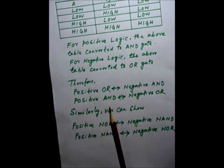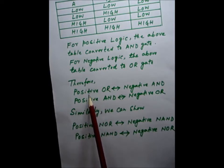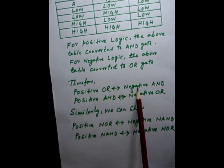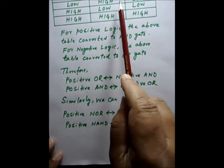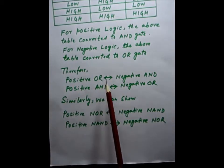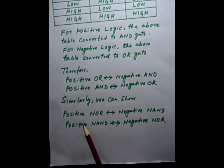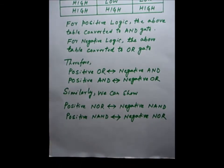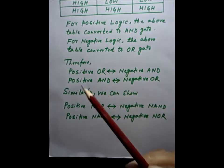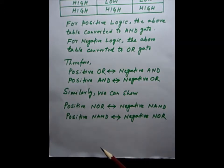From these two cases we can draw the conclusion that positive OR is equivalent to negative AND, and positive AND is equivalent to negative OR. Similarly, we can show that positive NOR is equivalent to negative NAND, and positive NAND is equivalent to negative NOR. We need to choose the table properly, substitute for positive logic and for negative logic, to prove these equivalences.